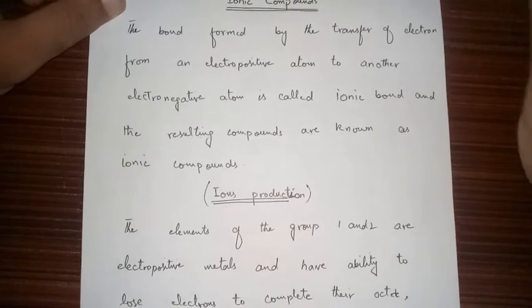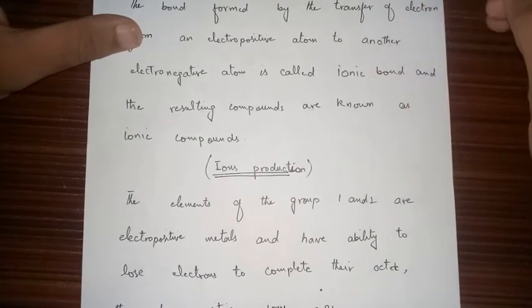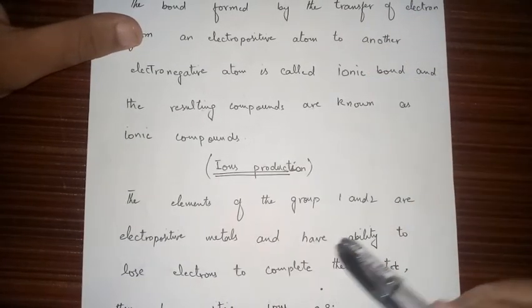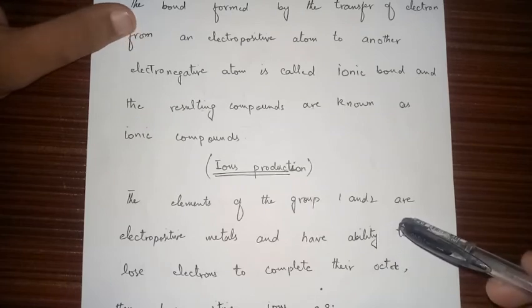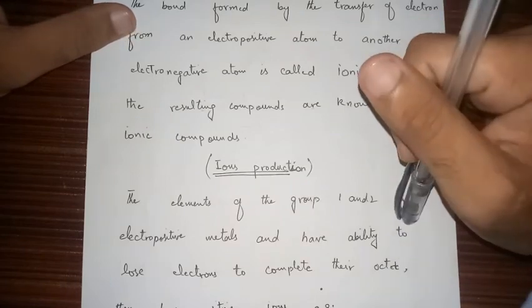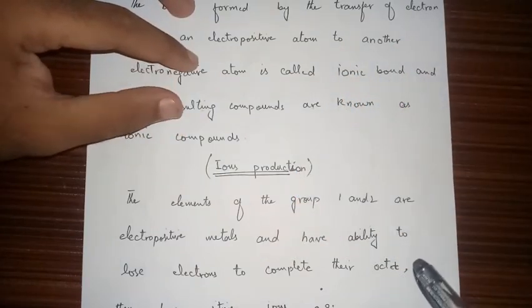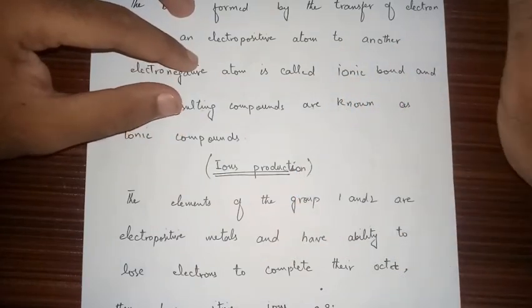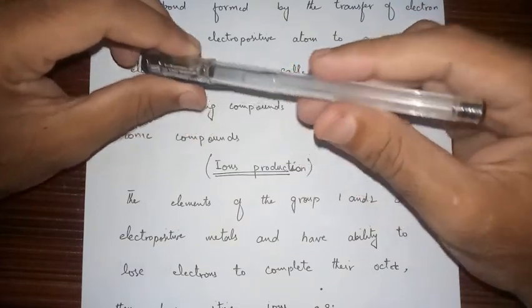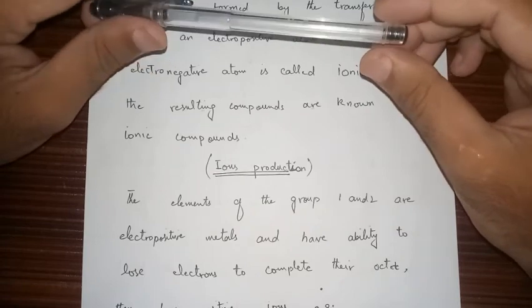Let's see how ions are produced in ionic compounds. Elements of groups 1 and 2 are electropositive metals and they have the ability to lose electrons to complete their octet. They have one to two electrons in their outermost shell, so they easily lose their electrons.